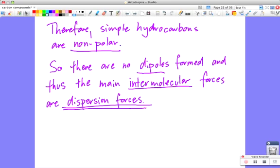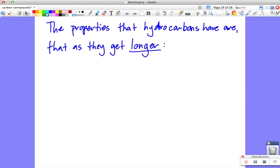So as I said, simple hydrocarbons are non-polar. And so what that means is there are no dipoles formed, and therefore the main intermolecular force that they have are dispersion forces. So between the molecules, between different molecules that are just the hydrocarbons, they're only held together by the weakest of the intermolecular forces. Every molecule atom has these dispersion forces, but sometimes they have strong ones as well, but not hydrocarbons. So that will help explain quite a lot of the properties.